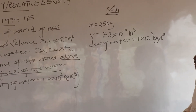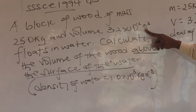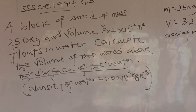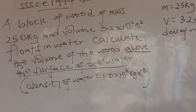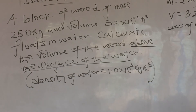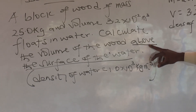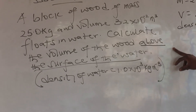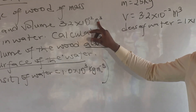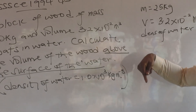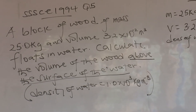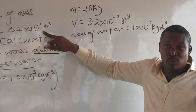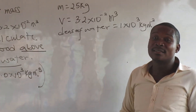The block has a total volume. When placed in water it floats, and we need to find the part above the water. This means part of the block is below the water surface — we are not interested in that — just the part above. The strategy is: find the volume of wood that is submerged in water, then subtract that from the total volume of the block. That will give the volume above the surface of the water.